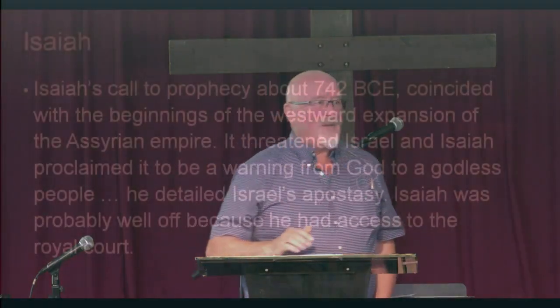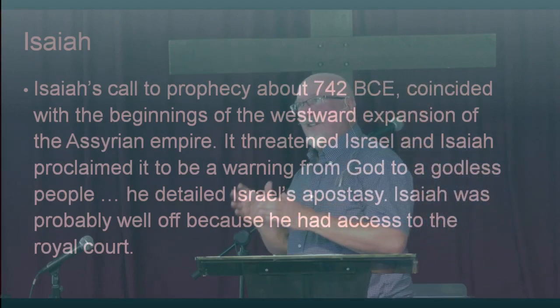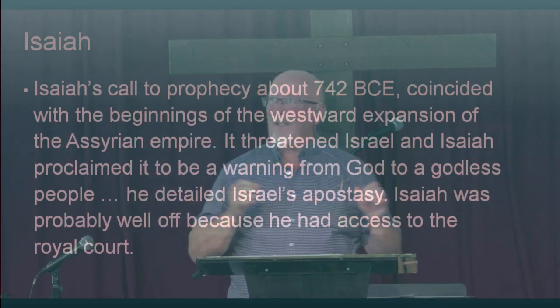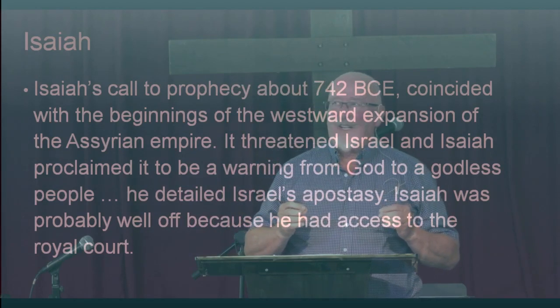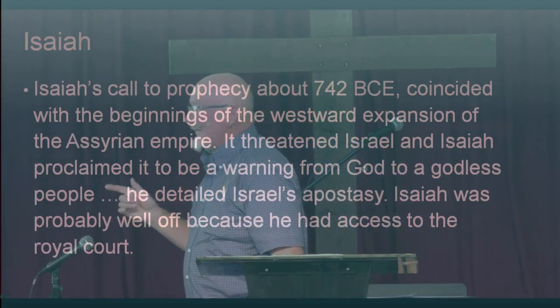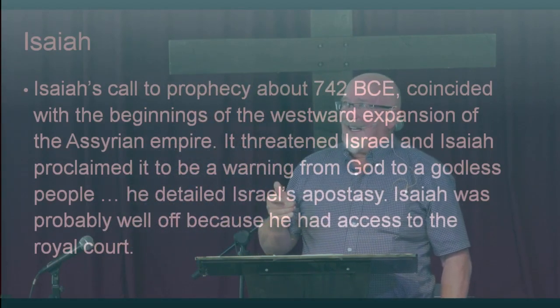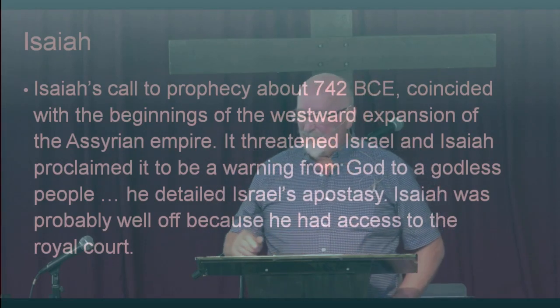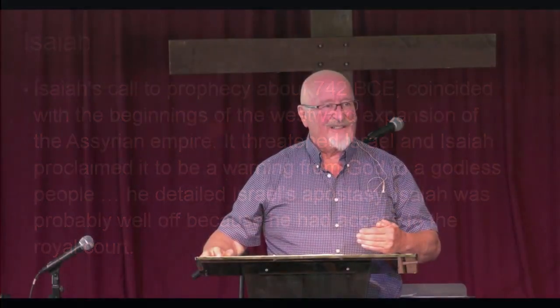Isaiah is called a prophecy. Isaiah was a prophet in Israel about 742 BC, and he was a prophet about the time that Assyria began to grow and expand into the west. That expansion threatened Israel. Isaiah said this was a warning to God's people, that God was about to punish them because they stopped listening to him, stopped following him, and stopped obeying him. He detailed that apostasy. Isaiah was probably fairly well off because he had an entry to the royal court, and he prophesied to successive kings — lasting through the reigns of about three or four different kings.